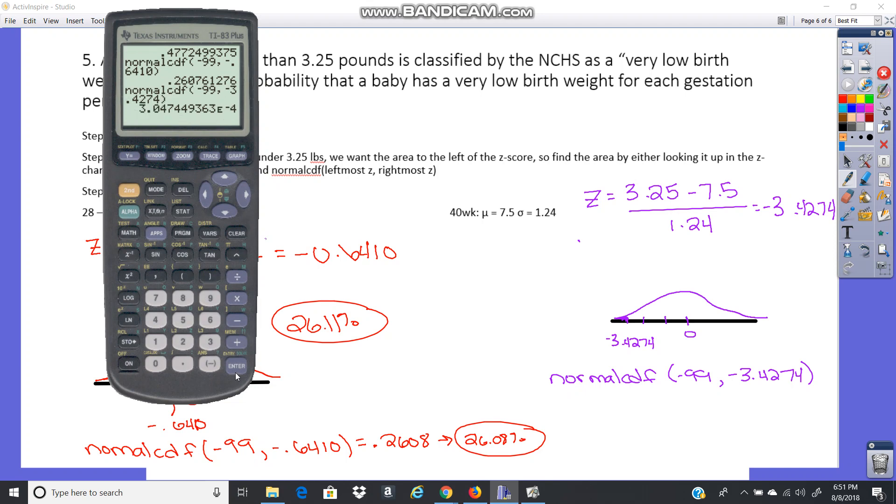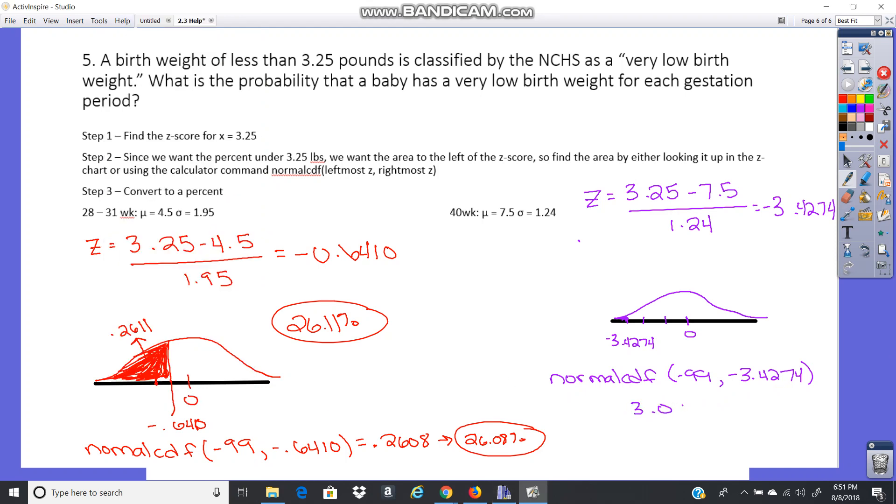And that gives us 3 times e to the negative 4. That's scientific notation. So that's 3.0 times 10 to the negative 4, which just means move the decimal place four places to the left. So 3, 1, 2, 3, 4. Here's my decimal. So I get three zeros in front of that. So really, really small probability.